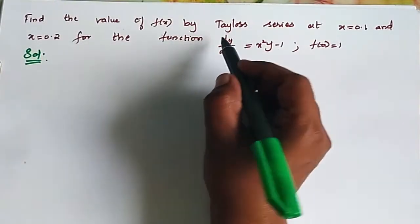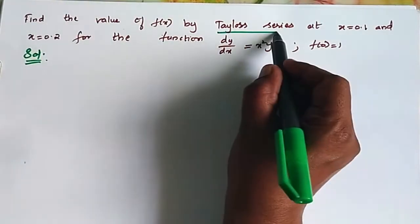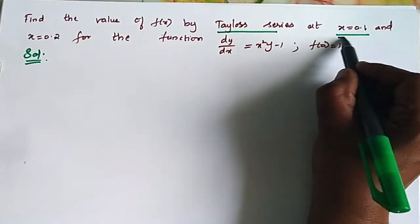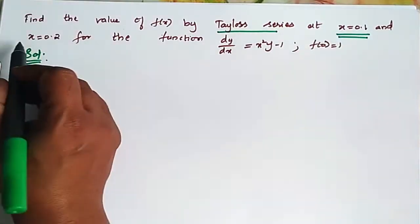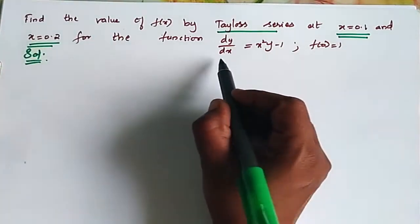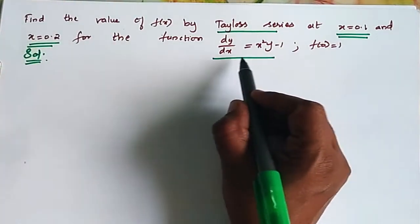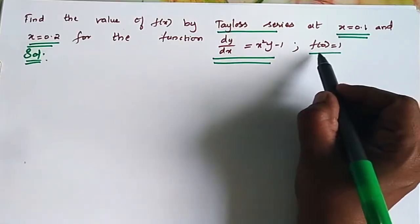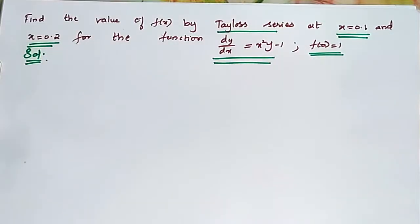Find the value of f of x by Taylor's series at x is equal to 0.1 and x is equal to 0.2 for the function dy by dx is equal to x square y minus 1, where f of 0 is equal to 1.